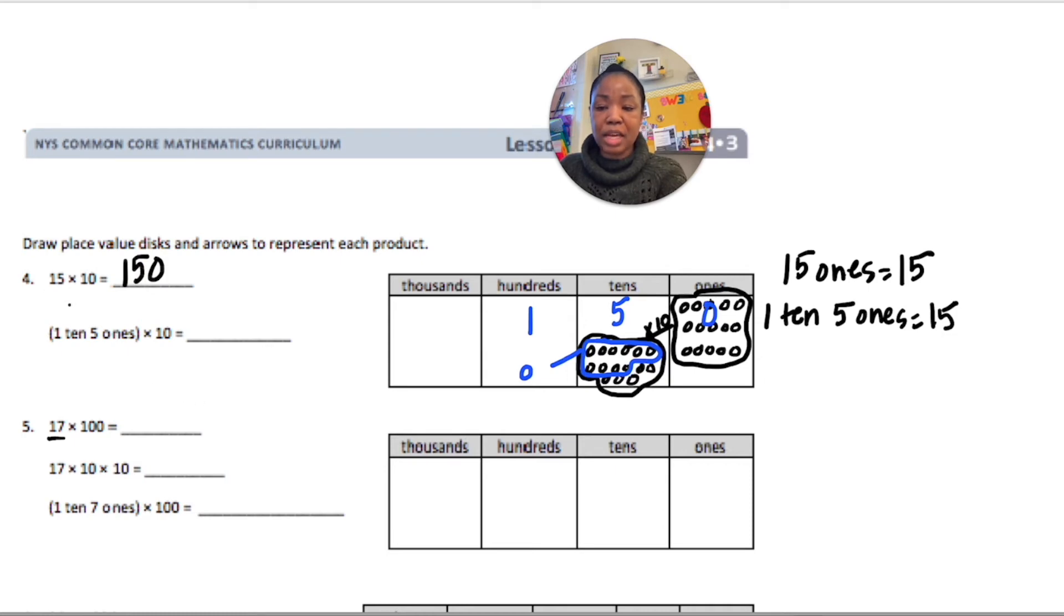Another way to think of this is 1 ten and 5 ones, which would be this 1 ten, same thing we did before, times 10. It's going to go up to the next place value. So, that would be 100, which is what we got in the end. The 5 ones times 10 is going to go up to the next place value, which is 5 tens.